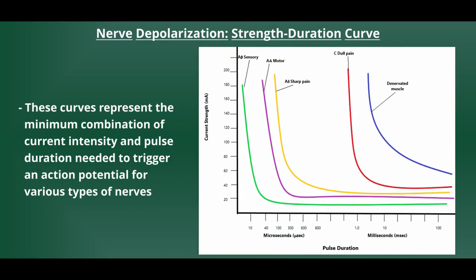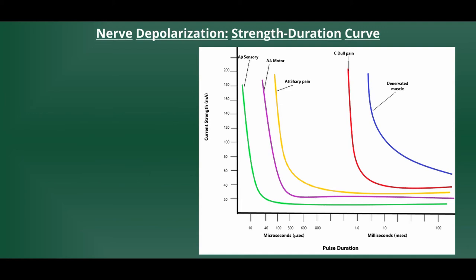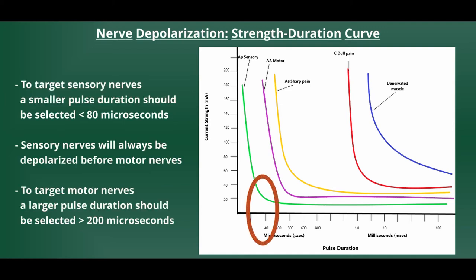The reason we have the ability to target specific types of nerves is based on our strength duration curve. Our vertical axis represents our current strength and our horizontal axis represents our pulse duration. By choosing a waveform with a shorter pulse duration, we are more likely to stimulate our A-beta sensory fibers than our A-alpha motor fibers. By choosing a longer pulse duration, we'll have an improved ability to affect our alpha motor neurons.